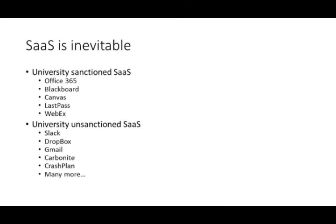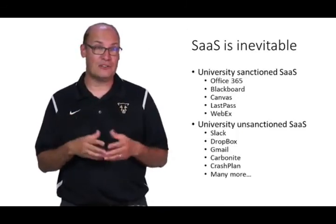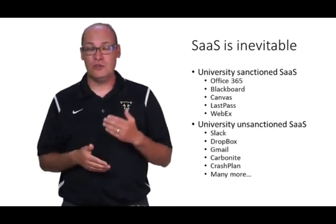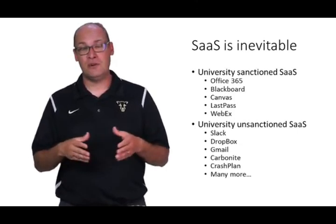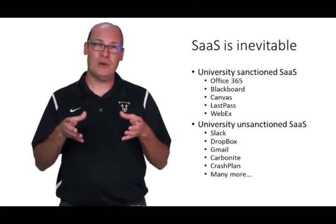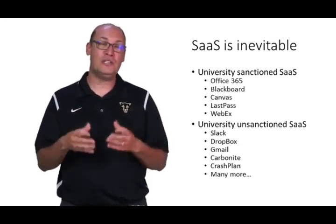Understand that SaaS is inevitable — going to a SaaS provider in some shape or form is unavoidable. For example, at the university we have sanctioned SaaS applications: Office 365, Blackboard, Canvas, LastPass, and WebEx. There are also unsanctioned SaaS applications that create shadow IT risk, such as Slack, Dropbox, Gmail, Carbonite, and CrashPlan. Departments use them for various reasons, and organizations must evaluate whether to provide those services officially.